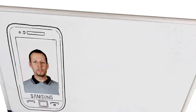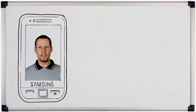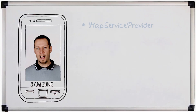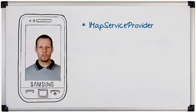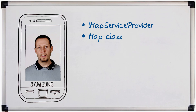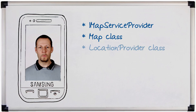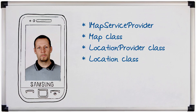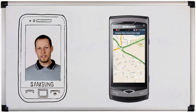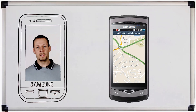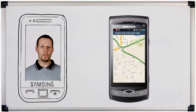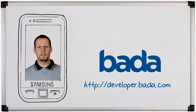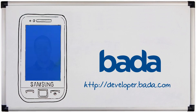In this video we introduced you to map and location functionality provided by the Bada platform. We particularly focused on getting geographic information via the IMapServiceProvider interface, presenting and controlling it on screen via the Map class, and displaying and updating a changing location with the LocationProvider class and the Location class. We hope you enjoy bringing your location-based applications to life on the Bada platform. Extensive documentation is provided in the SDK and there will be further technical walkthroughs available, so please keep checking our website at developer.bada.com for even more content to dive into Bada.